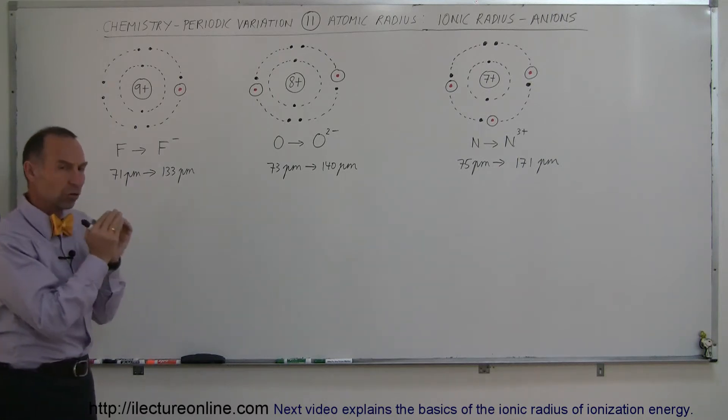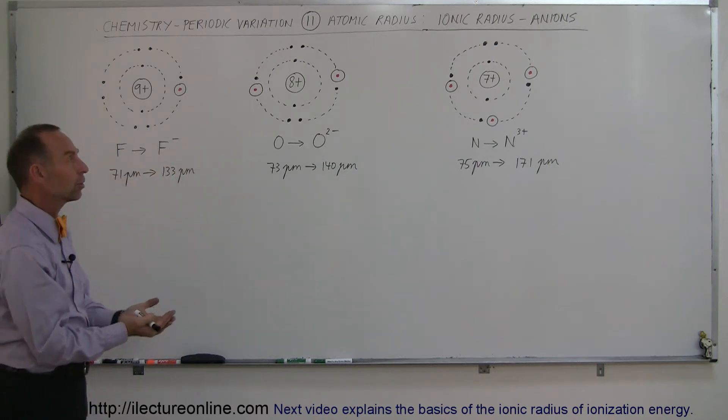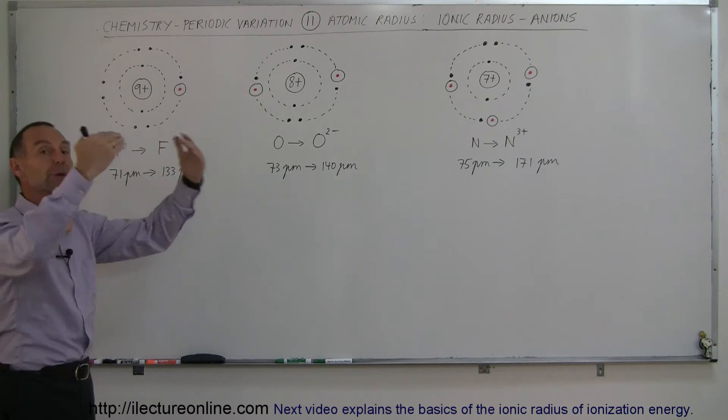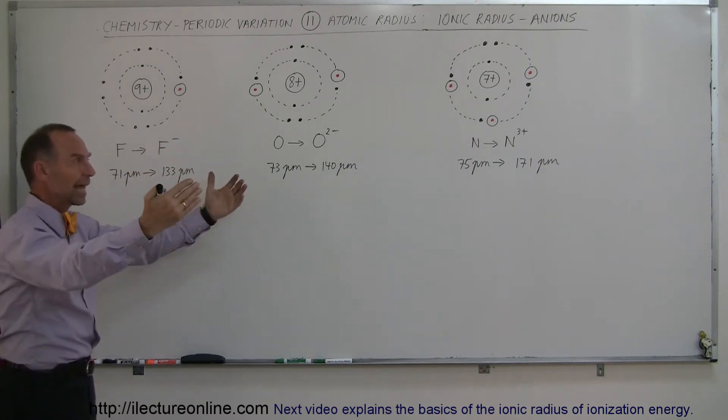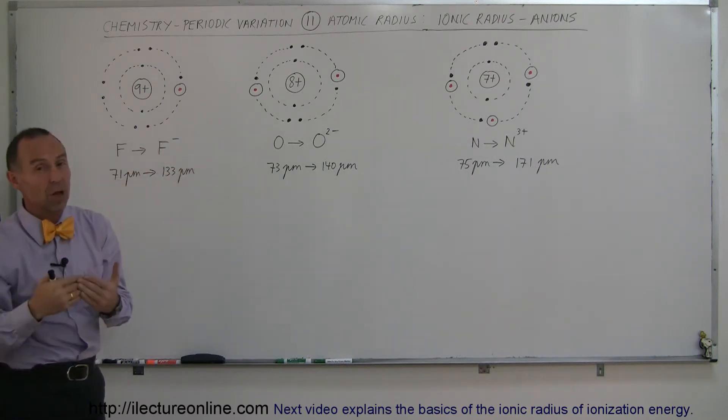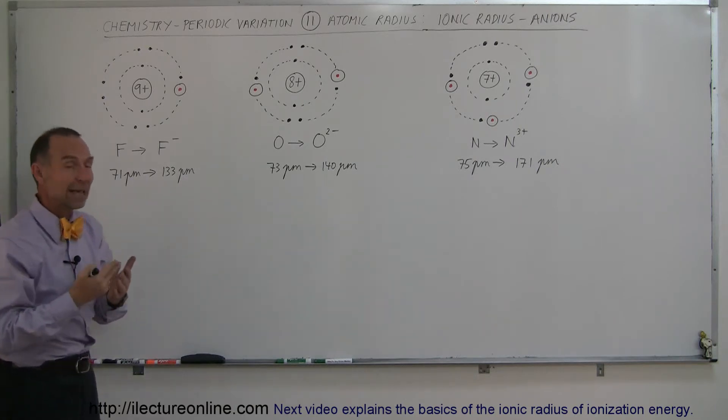The charge at the nucleus stayed the same, yet less electrons around the nucleus, and so therefore a larger positive charge relative to the fewer negative charges caused the atoms to become smaller. So cations tend to be smaller than the atoms that they came from.